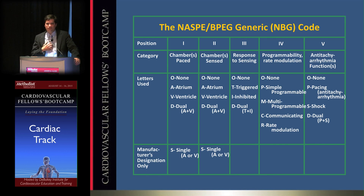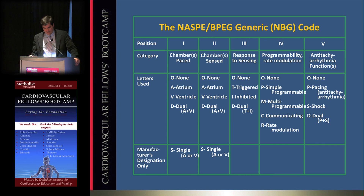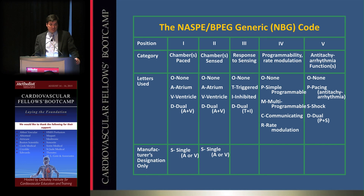The fourth letter in the nomenclature represents rate modulation. Modern devices use sensors such as vibration or respiratory movement to physiologically increase the pacing rate during exercise — critical for pace-dependent patients who want to remain active. The fifth letter covers programmability: multi-programmable means more than three adjustable parameters; single-programmable means fewer than three. The final position covers anti-tachycardia functions such as shock delivery in defibrillators.